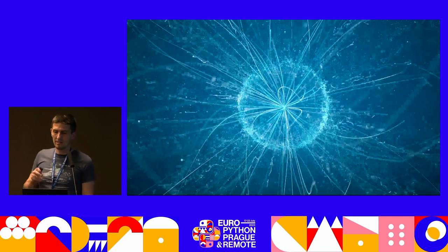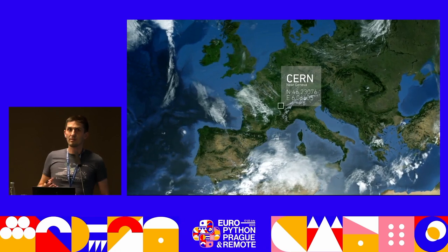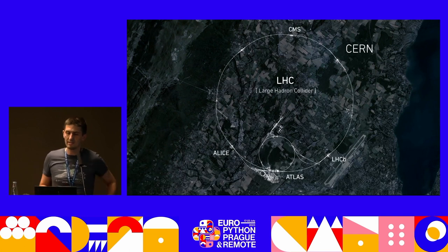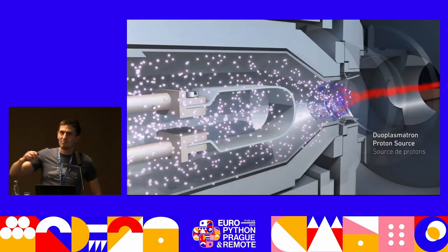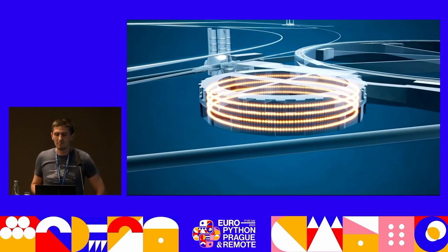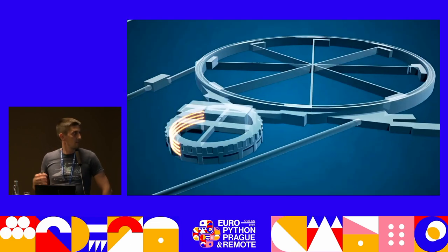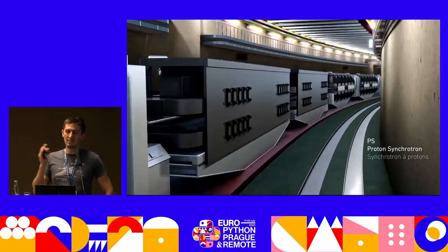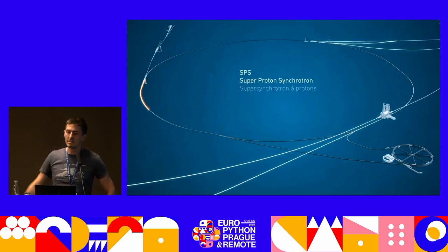CERN is based in Geneva on the border between Switzerland and France, and we have an incredible complex of accelerators and experiments to measure the results of these accelerators. It really starts very simply with a hydrogen bottle — out comes a beam and we accelerate it through our linear accelerator, then inject it into our proton synchrotron booster, increasing the energy in the beam through four beam lines, and then once they've reached a certain energy we transfer them over to our proton synchrotron.